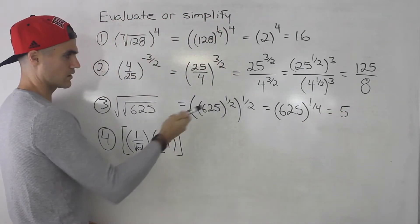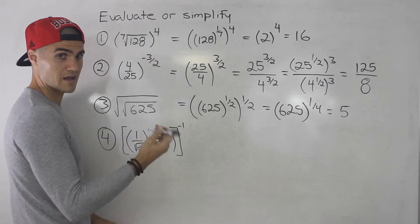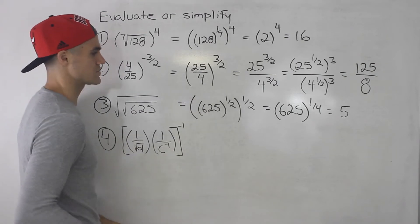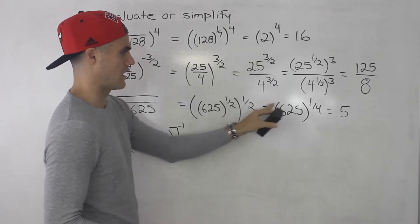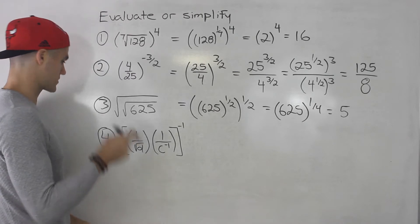And we could have got that answer right away here as well. Square root of 625 is 25 and the square root of 25 is just 5. But again, I like to break it down a little bit further with rational exponents.